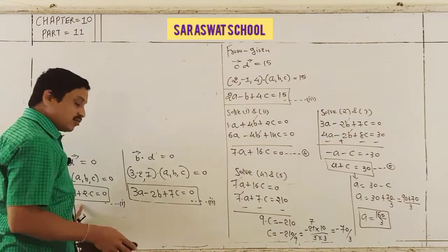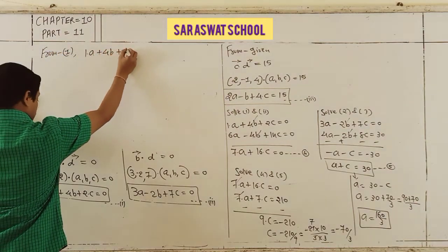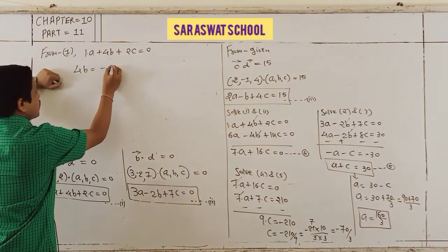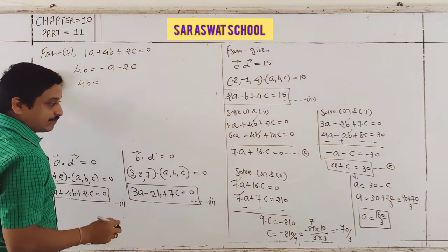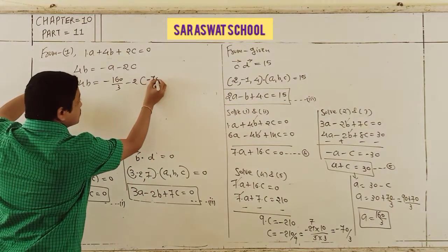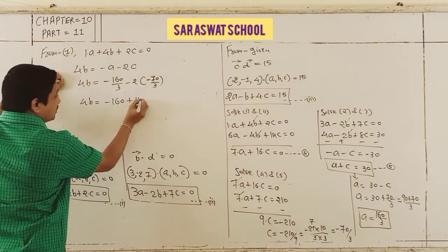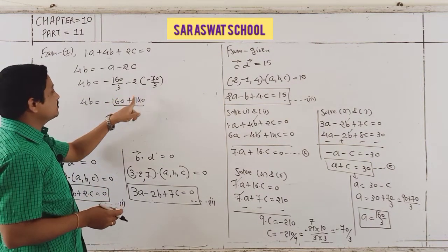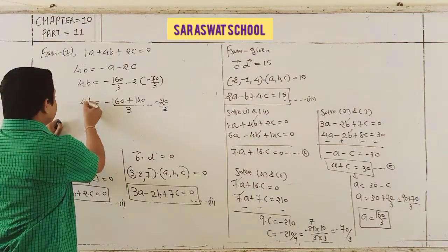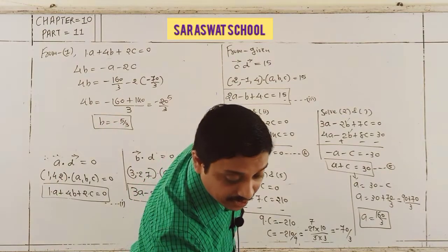Using equation 1: 1a + 4b + 2c = 0. So 4b = −a − 2c = −160/3 − 2(−70/3) = −160/3 + 140/3 = −20/3. Therefore b = −5/3. Now a, b, and c are all found.